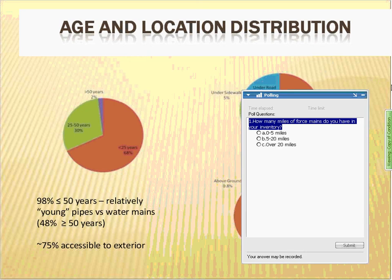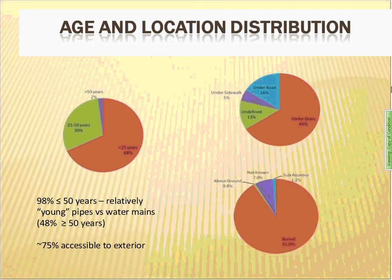There is some good news: we're looking at a relatively young product, especially compared to water mains. Over 98% of the underground sewer force mains market is less than 50 years of age — compared to water mains where roughly 50% is older than 50 years. Additionally, most of these pipes are buried: over 91% tends to be buried, and of buried pipe, about two-thirds is in undeveloped grassy areas, so external access is quite possible.